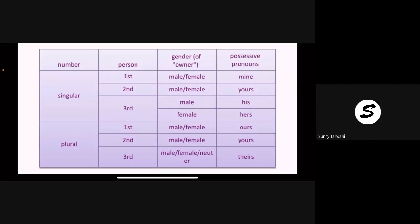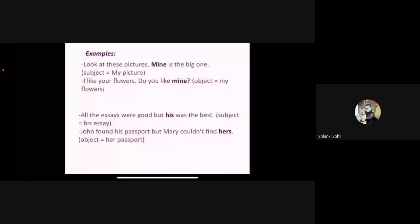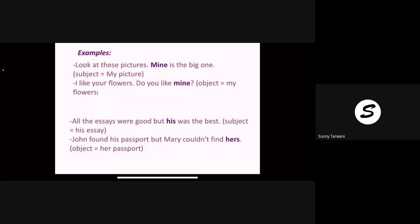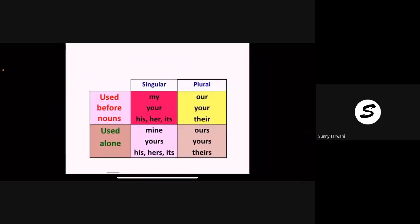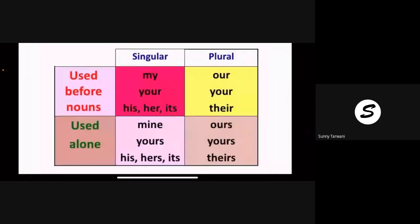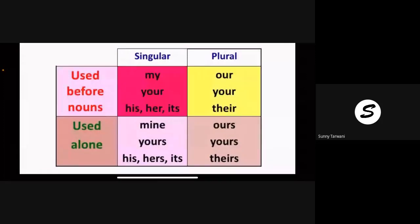Do you understand what possessive pronouns are and what they are used for? Mine means my picture — 'mine is the big' means 'my picture'. Mine means 'my', his means 'his', hers means which belongs to her. Singular and plural — these are all possessives which are used before the noun. These are all possessive pronouns.